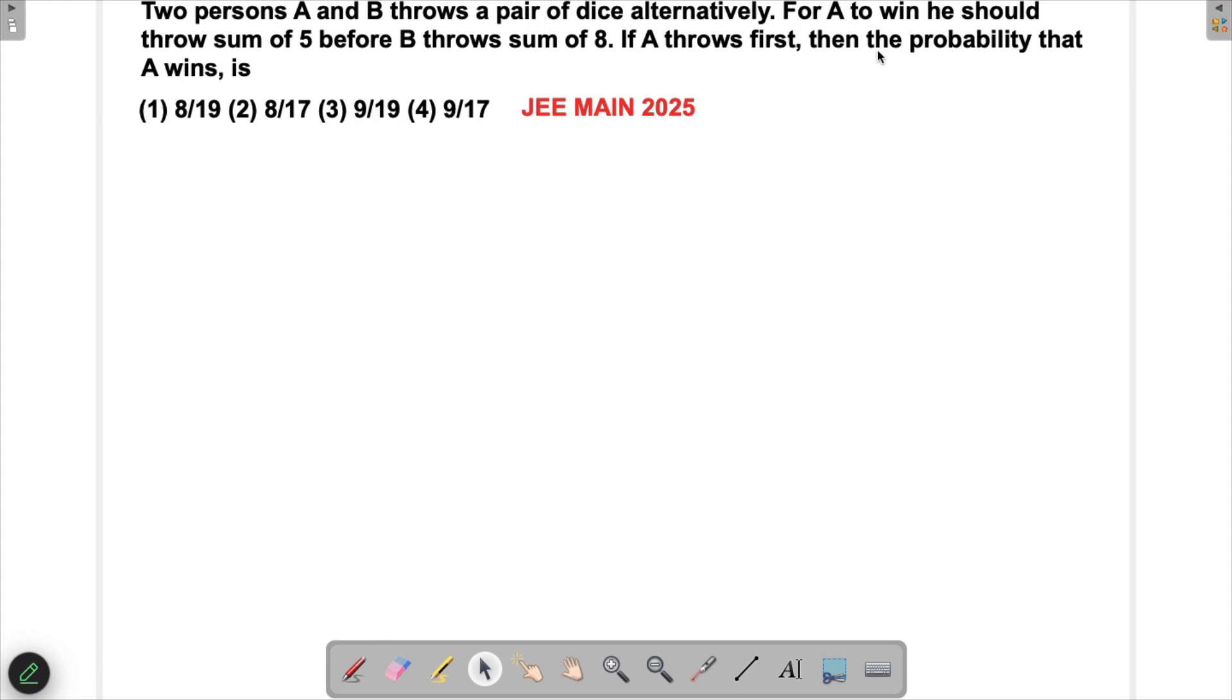If A throws first, then the probability of A winning is what we need to find. I have done a similar problem and you can watch that video. This is a problem of infinite probability - this game can go on and on until someone wins it.